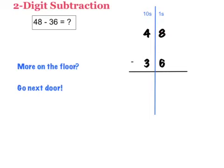Let's try a problem that does not follow this rule. 48 minus 36 equals what? I'm going to look at my ones place. I'm going to circle the bigger number. 8 and 6, 8 is the bigger number. This does not follow the rule more on the floor, go next door. I do not have more on the floor.